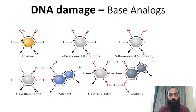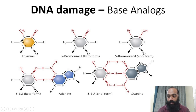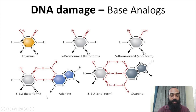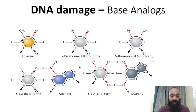The next type of damage is brought about by base analogues — chemicals that resemble the structures of the bases. One example is 5-bromouracil, which closely resembles thymine. There are two forms of 5-bromouracil: the keto form and the enol form. The keto form pairs with adenine just as thymine normally does, but the enol form mis-pairs with guanine. This mis-pairing can occur when 5-bromouracil is incorporated into dividing cells during replication.